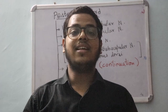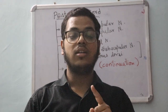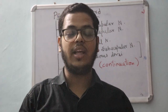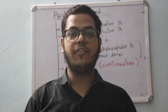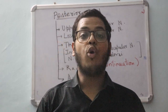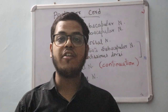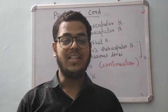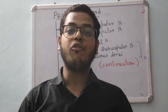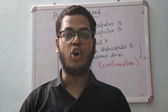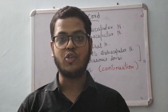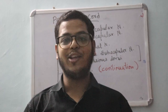So that is the brachial plexus — the roots, trunks, divisions, and cords — along with the branches of each segment. Divisions do not have any branches. If you want to study peripheral nerve injuries related to the brachial plexus, please subscribe to my channel Med Talks and watch the next videos. Thank you for watching — please like, subscribe, and comment below to tell me what topics you want to see.